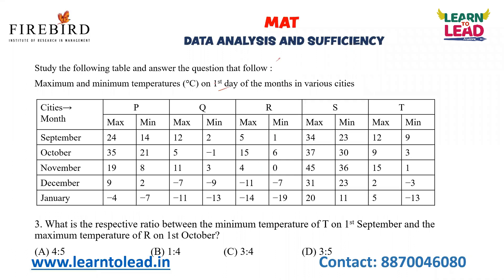The third question: what is the respective ratio between the minimum temperature of T on 1st September and the maximum temperature of R on 1st October? Minimum temperature of T on 1st September is 9, and the maximum temperature of R on 1st October is 15. So 9 is to 15 — cancel both, 3 is to 5 is your answer.